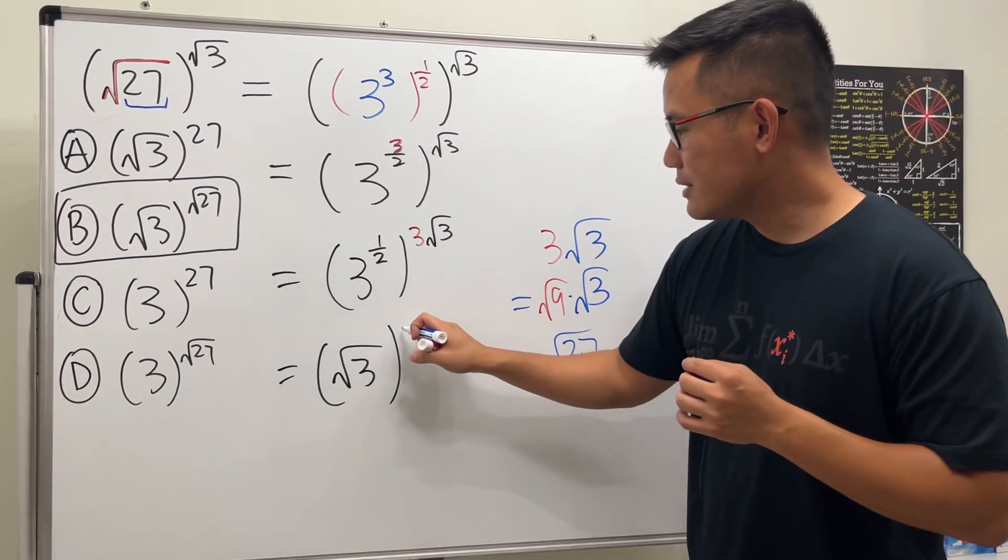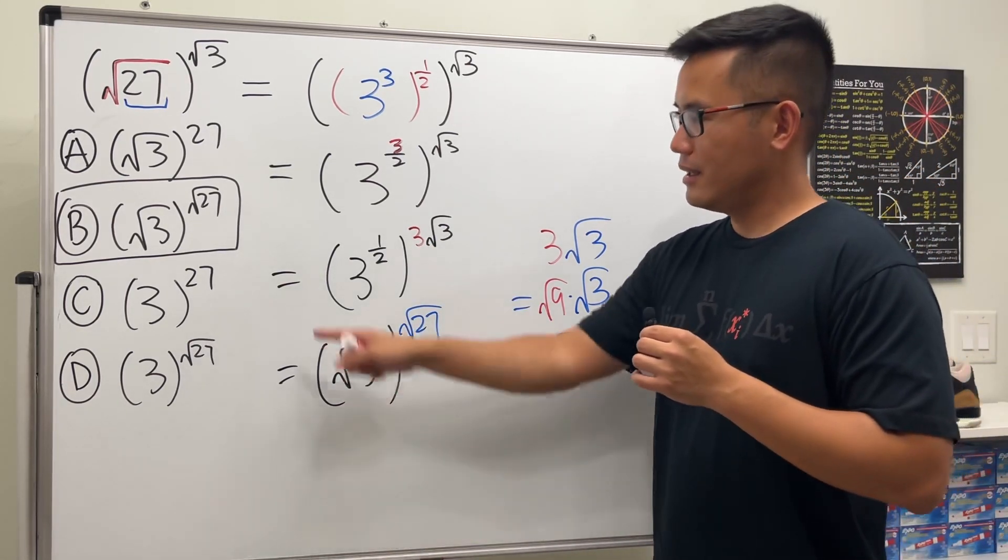So this power right here is just square root of 27. That's why it's equal to B.